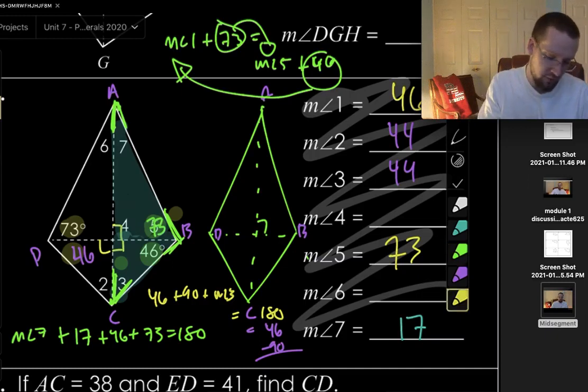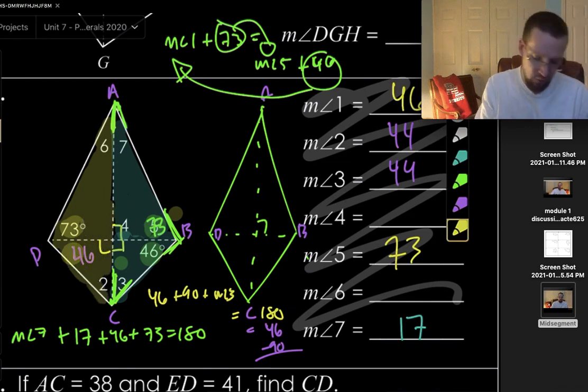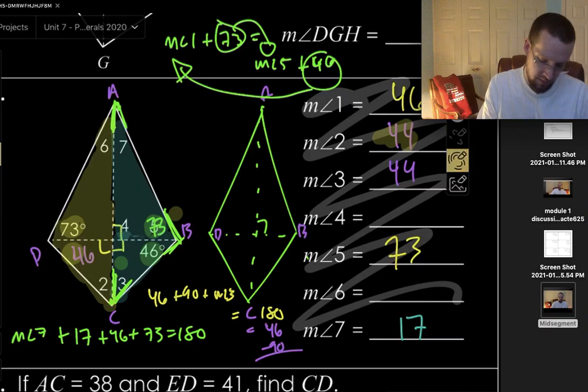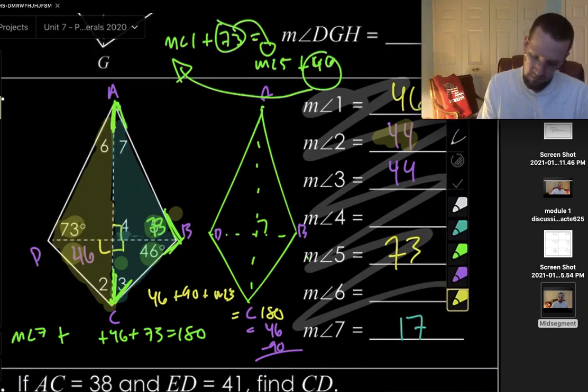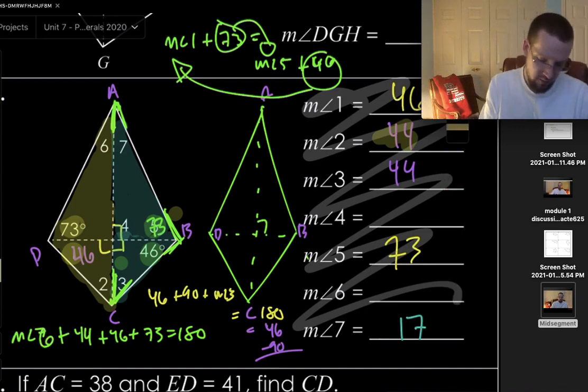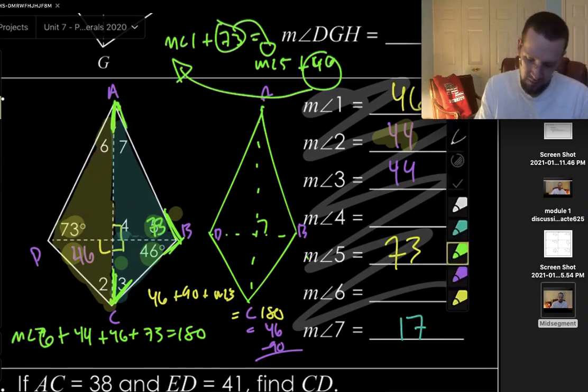And those same two ways, similarly, are over here, right? You could look at this whole triangle. And again, you could do a measure of angle 2, which we found to be 44, plus, that's not 17. My bad. This should be 44. That's my bad. Measure of angle 6, now, we could find. Plus 44, plus 46, plus 73, plus this angle is equal to 180. And again, you actually get the same measurements here. So, we find, oh, this was 90, of course. And so, we find that this also to be 17.